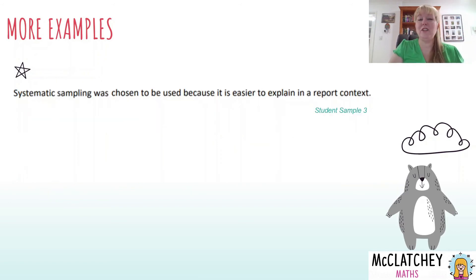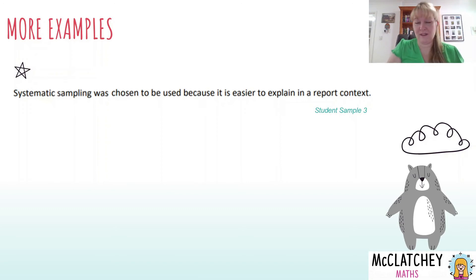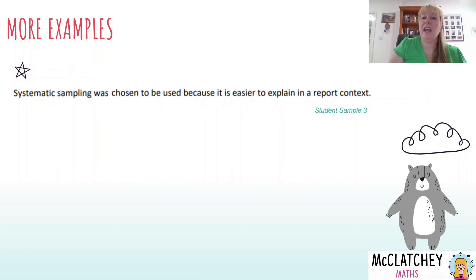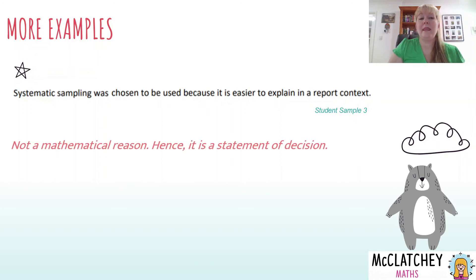Here's another student example: 'Systematic sampling was chosen to be used because it's easier to explain in a report context.' They've given a reason, but it's not a mathematical justification. It falls into the category of a statement of decision as opposed to a justification of decision. Remember from the ISMG that decisions need to be justified mathematically — this is not a mathematical reason.